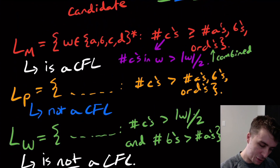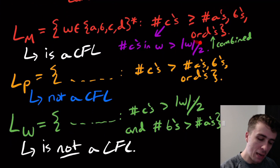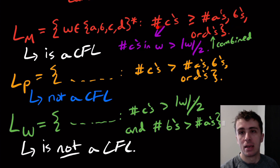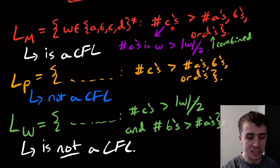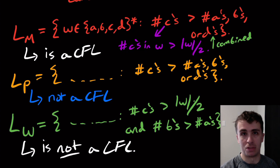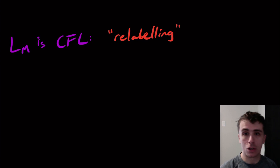So let's show first that L_M is context-free. The way this is done is actually pretty clever. Another way to phrase this problem is: if we add up all of the A's, B's, and D's in the string, the total number of A's, B's, and D's is less than the number of C's. Another way to phrase this uses something I'm going to call relabeling — the technical term is a homomorphism.